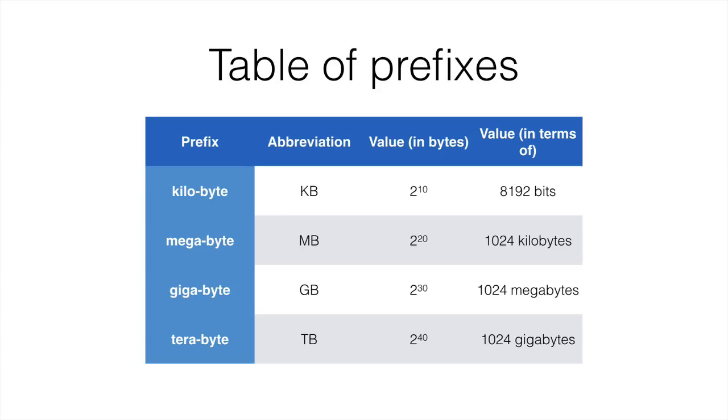The next row, megabyte, its value is 2 to the power of 20, and it is 1024 kilobytes. The following line, gigabyte, is 1024 megabytes. And the last one, terabyte, is 1024 gigabytes.